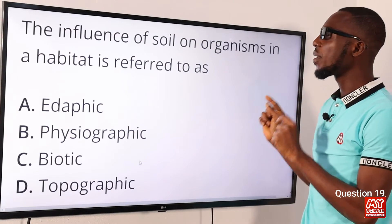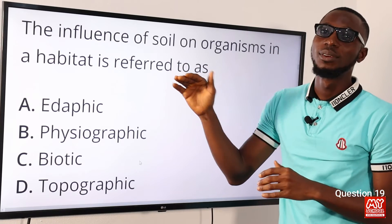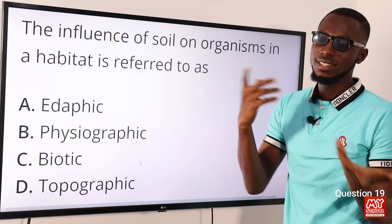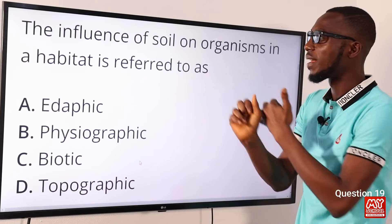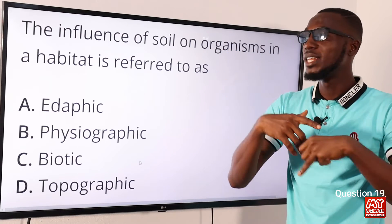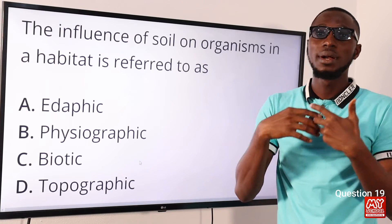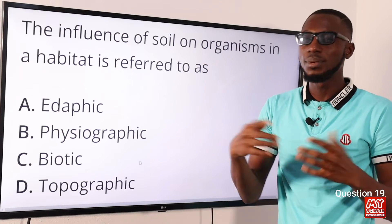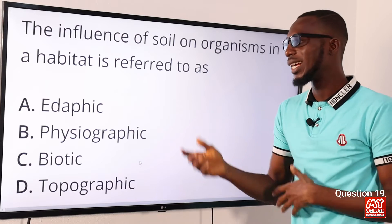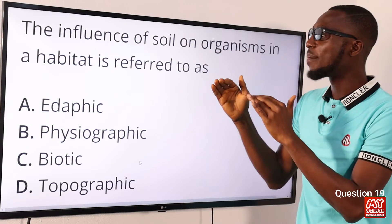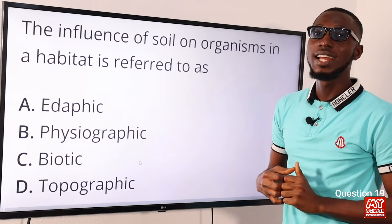Question nineteen: the influence of soil on organisms in a habitat is referred to as what? Soil is an abiotic factor. Abiotic factors include topographic factors, edaphic factors — which refer to soil composition, pH, nutrients, and structure — chemical factors like mineral salts and oxygen, and climatic factors like rainfall, temperature, and sunlight. The influence of soil on organisms is referred to as the edaphic factor. The correct option is option A.